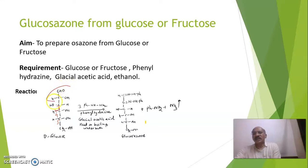Product formation is taking place on carbon number 1 and carbon number 2. So whatever that may be, glucose or fructose as starting compound, we will get same osazone since configuration at carbon 3, 4, and 5 for glucose and fructose is same.